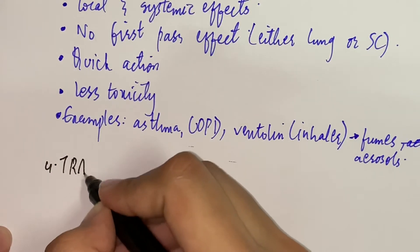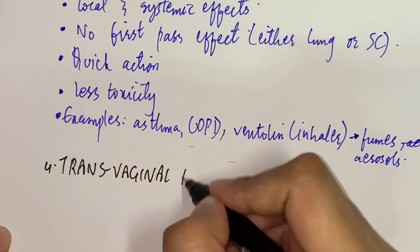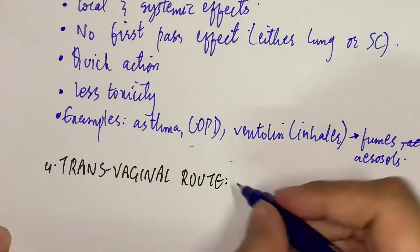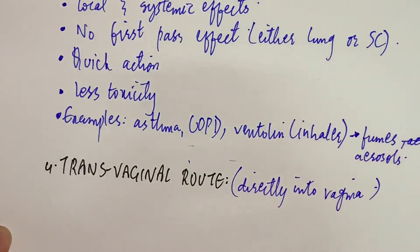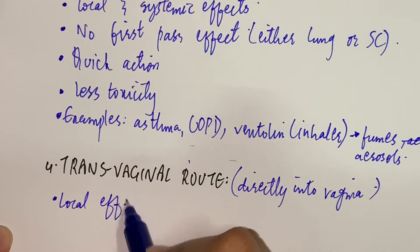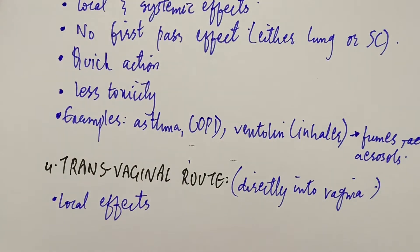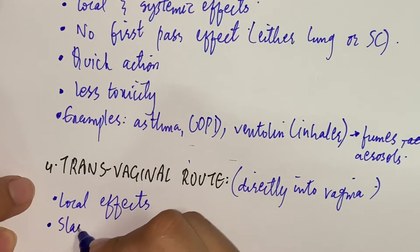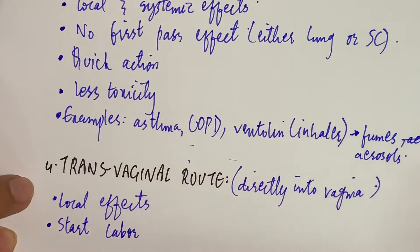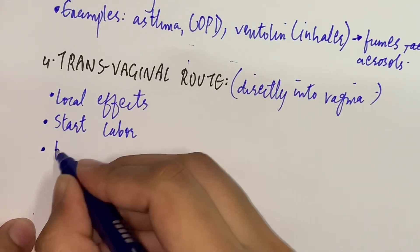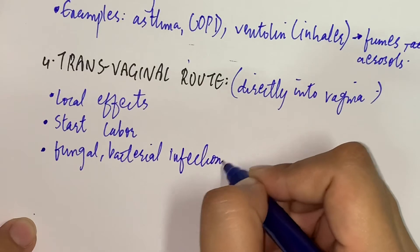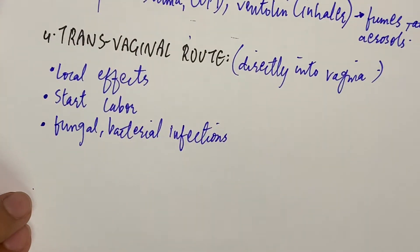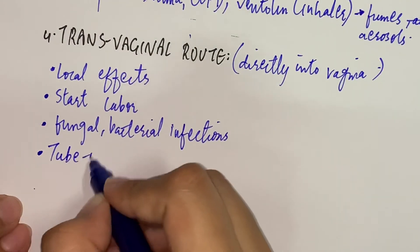The fourth route is the transvaginal route — directly into the vagina. It gives local effects. If there are bacterial or fungal infections in the vagina, we give drugs via the transvaginal route. We use this route for fungal and bacterial infections.